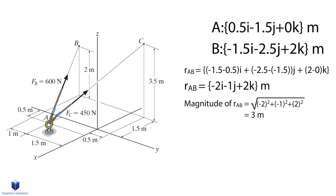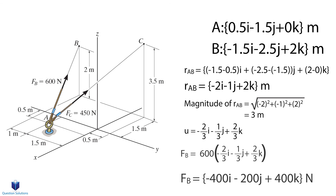The next step is to find the magnitude of this position vector. The magnitude is equal to the square root of negative 2 squared plus negative 1 squared plus 2 squared, which when solved equals 3 meters. Next up is finding the unit vector denoted U. The unit vector is simply each corresponding coordinate of Rab divided by the magnitude. The unit vector is equal to negative 2 over 3i, negative 1 over 3j, and 2 over 3k. We can now write force FB in Cartesian vector notation by multiplying each corresponding unit of our unit vector by the force itself. FB in Cartesian vector notation is negative 400i negative 200j plus 400k Newtons.